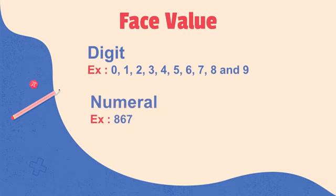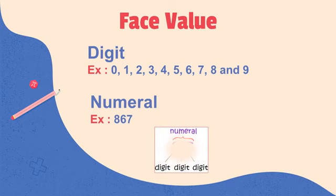Here I have taken an example of 867. It's a numeral. In 867, the digits are 8, 6, and 7.